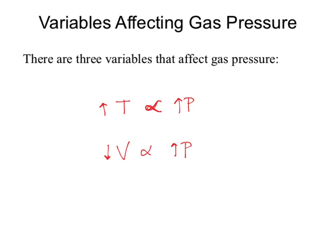What else affects pressure? The amount of gas. If I blow more air into a balloon, eventually it pops — because I've increased the pressure enough that it breaks the balloon. So pressure increases with the amount of gas — the count unit, which is moles. Also known as N. Notice: temperature is T, pressure is P, volume is V, moles is represented by N — because M is already taken by meters and capital M is molarity.